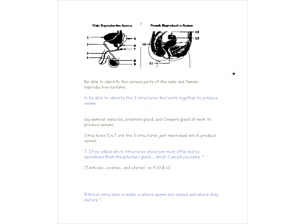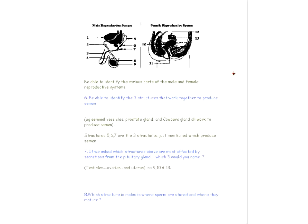Question eight says: which structure in males is where sperm are stored and where they mature? This one is maybe a little less obvious — it's the epididymis. The epididymis is right beside the testes, and that's where sperm are stored.